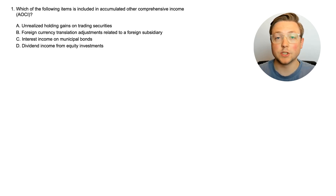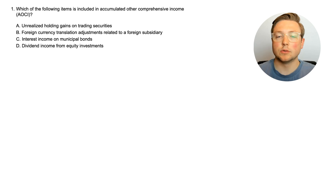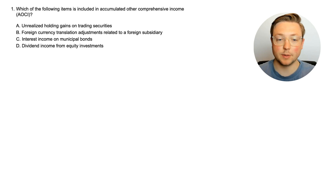Here we are at question one. This is a fairly straightforward topic — it's a remembering and understanding topic on the blueprints. Not really much calculation here; it's more about understanding what is classified as other comprehensive income. Which of the following items is included in accumulated other comprehensive income, or AOCI? That's connected to OCI — we'll talk about that a little bit.